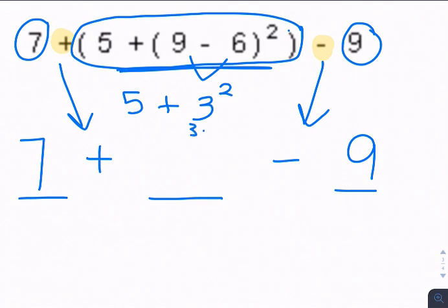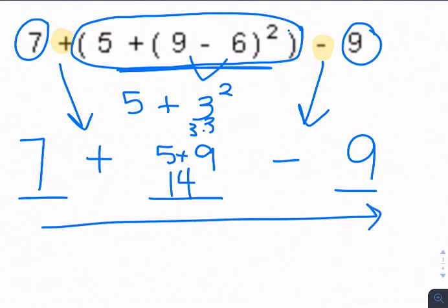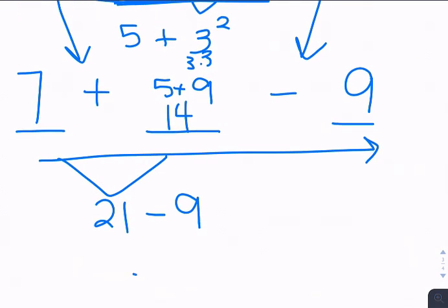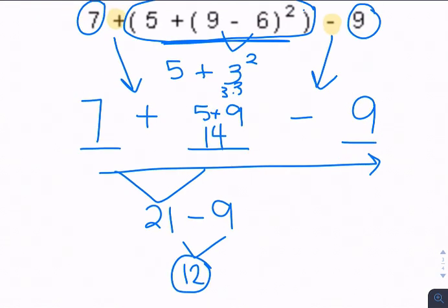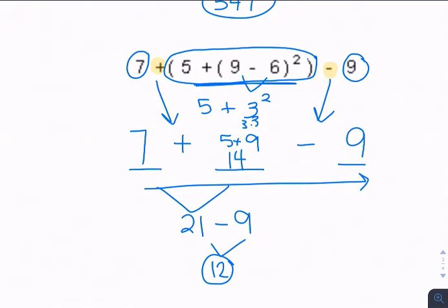This is really 3 times 3, which is 9. 5 plus 9 is 14. So this is 7 plus 14 minus 9. I need to go from left to right. 7 plus 14 is 21. 21 minus 9 is 12. It looks like negative 12. Let me fix that. There we go. So that's an example of order of operations and how we circle terms.